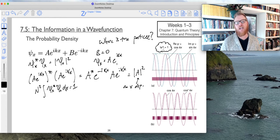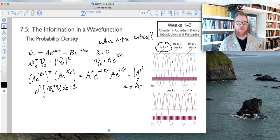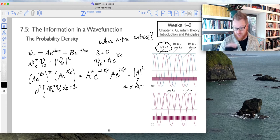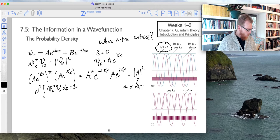And so an interpretation of that, that e to the ikx, that would be made up of a real component that's a cosine function and an imaginary component that's a sine function through that Euler relation. And so if I add those two waves together, I get this uniform constructive interference.